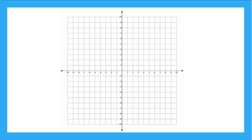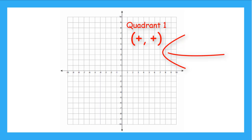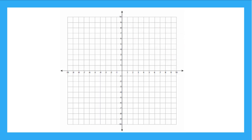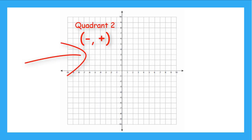Let's do a quick review. Ready? Point to quadrant 1. That's right, it's right here. And it has ordered pairs that look like positive x, positive y. Now, point to quadrant 2. Yep. With ordered pairs: negative x, positive y.